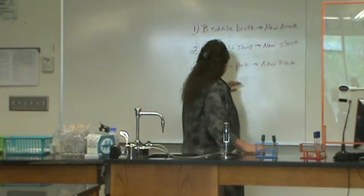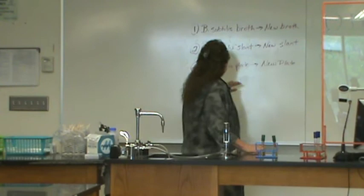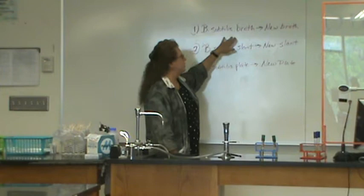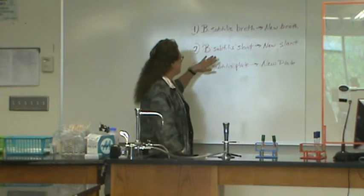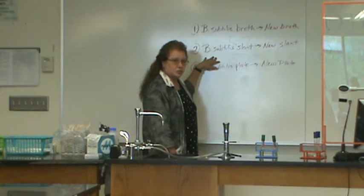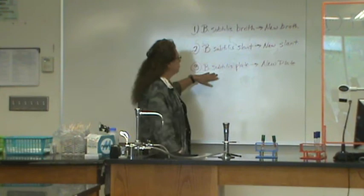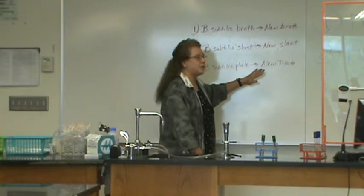You will be learning how to do three different subcultures today. You will be transferring some from a Bacillus subtilis broth to a new broth to make a new subculture of Bacillus subtilis in a nutrient broth. You will be taking a Bacillus subtilis slant, an existing culture, and making a new slant of Bacillus subtilis. And you will be using a Bacillus subtilis plate to make a new nutrient agar plate of Bacillus subtilis.